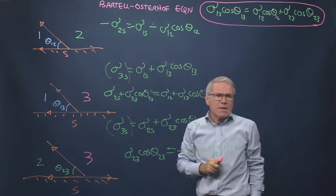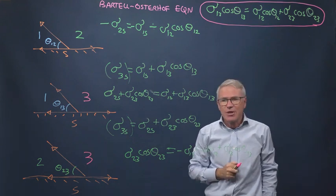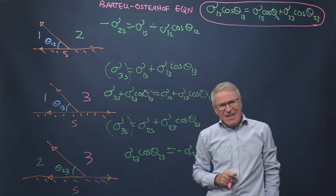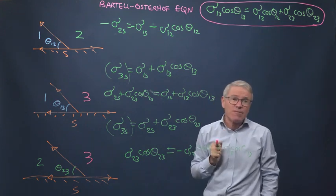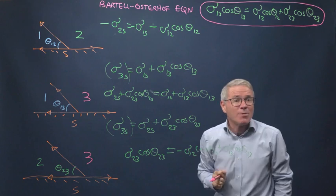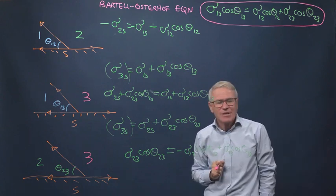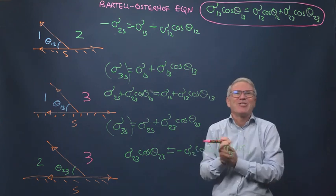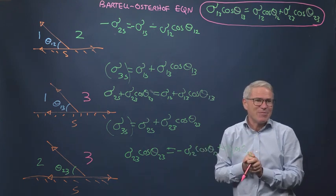This relationship was first derived in the 1930s - it's called the Bartell-Osterhoff relationship. Now let's look at a couple of consequences. I hope you can follow the mathematics. It's reasonably straightforward, don't get yourself into a muddle. It's a perfectly rigorous derivation assuming everything is in equilibrium.